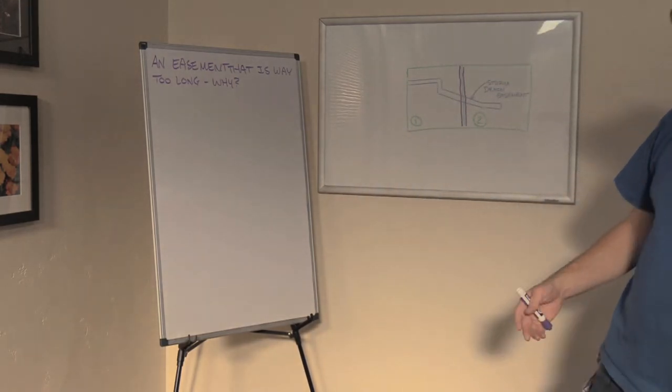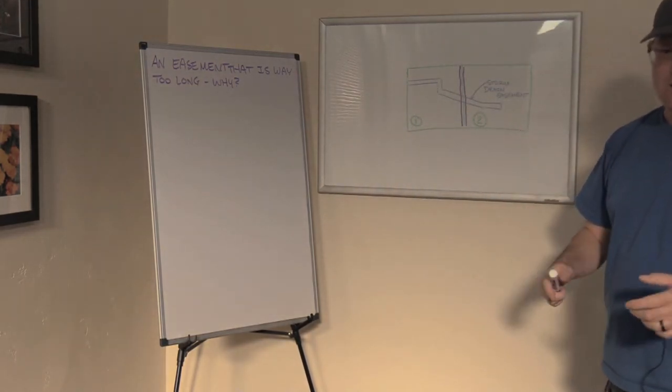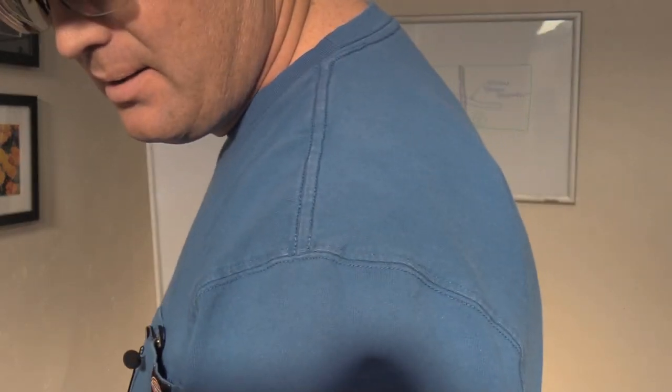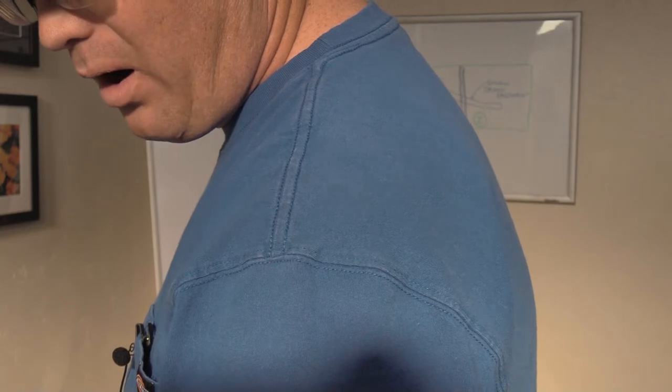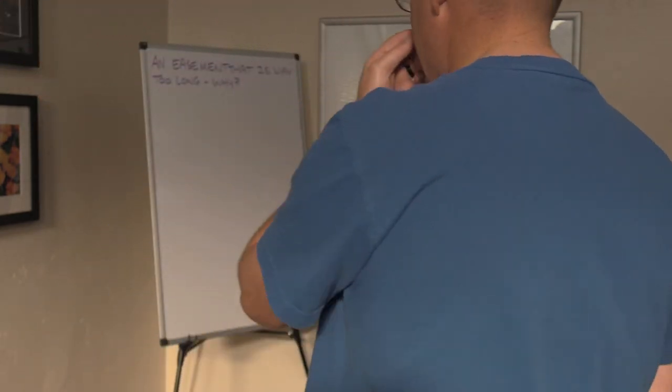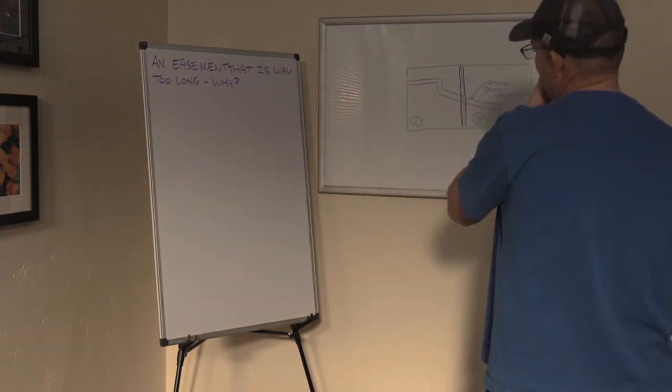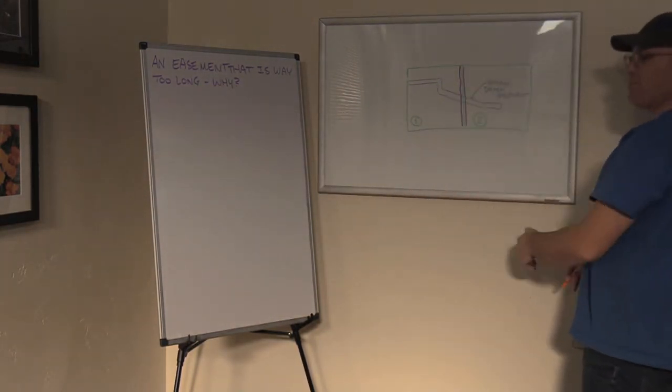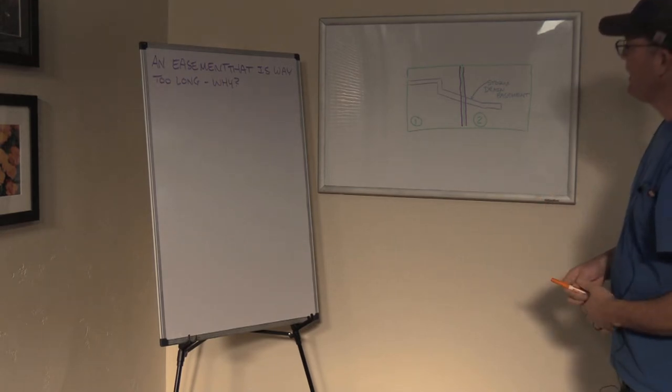Now, I understand why that happened in this particular case. Let me explain why that is a bad idea. If you are the owner granting the easement, it's a bad idea. I want to explain why. And then I want to explain what you can do as an alternative if you're in this situation where you have kind of a fuzzy property line, but you still need to grant an easement.